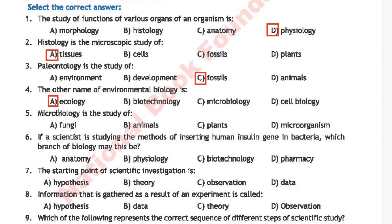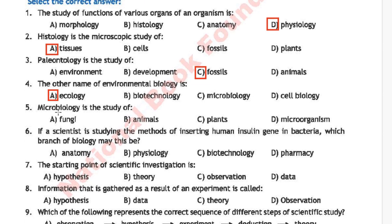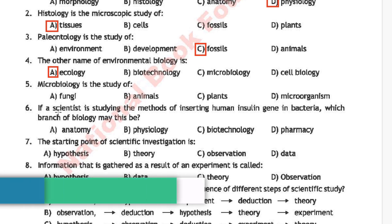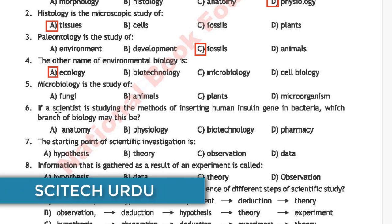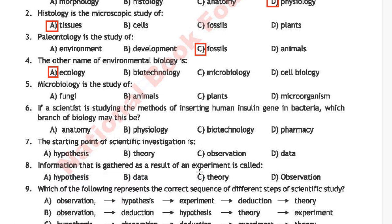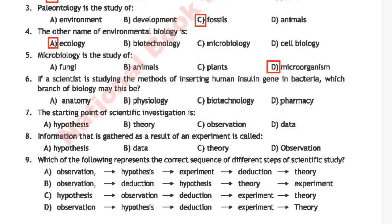MCQ number 5: microbiology is the study of — option A: fungi, option B: animals, option C: plants, option D: microorganisms. The correct answer is option D, which is microorganisms.